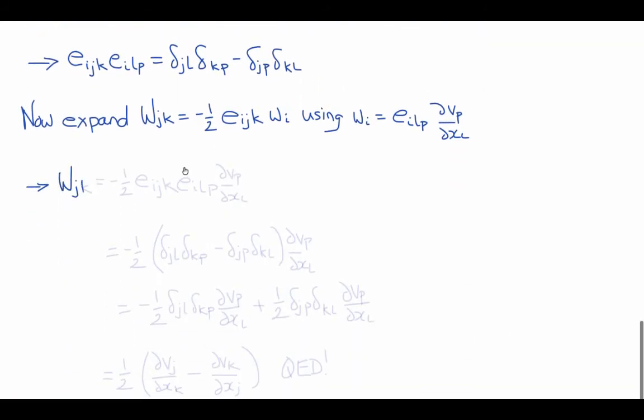This will now become wjk equals minus one-half eijk times eilp times del vp del xl. And now we'll use our e delta identity and this product will become minus one-half delta jl delta kp minus delta jp delta kl times del vp del xl.